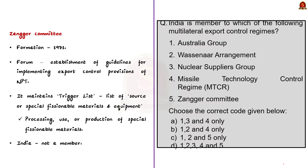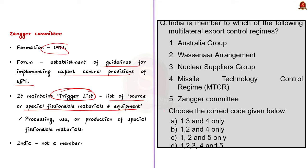The Zanger Committee was formed in 1971 as a forum to establish guidelines for implementing the export control provisions of the Non-Proliferation Treaty among nuclear supplier members of NPT. The Zanger Committee maintained a list of controlled nuclear-related items called the trigger list — a list of source or special fissionable materials and equipment designed or prepared for the processing, use, or production of special fissionable materials. India is not a member of the Zanger Committee. Coming back to the question, India is a member of the Australian group, Wassenaar agreement, and MTCR only, so the correct answer is option B: 1, 2, and 4 only.